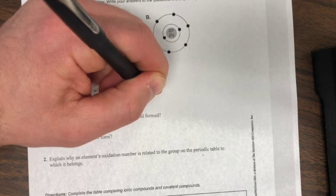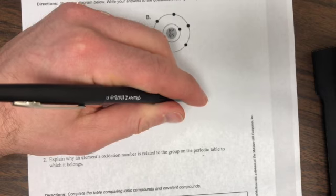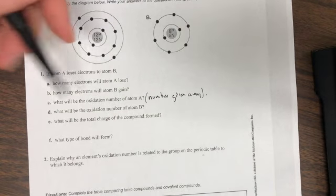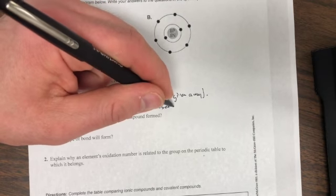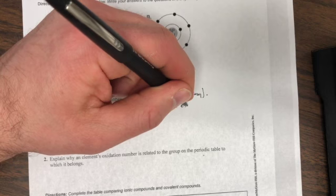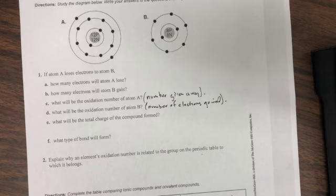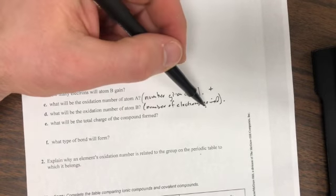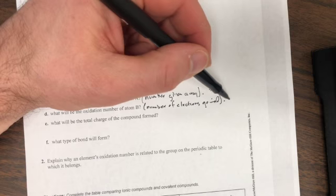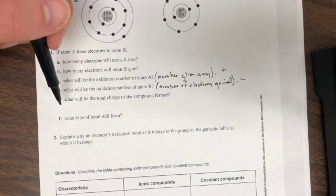What will be the oxidation number of B? That will be the number of electrons gained. When you give away electrons, your oxidation number is plus one, plus two, plus three, plus four. If you gain electrons, that's a negative number. Letter E: what is the total charge of the compound formed?